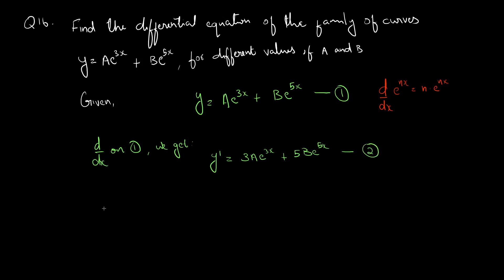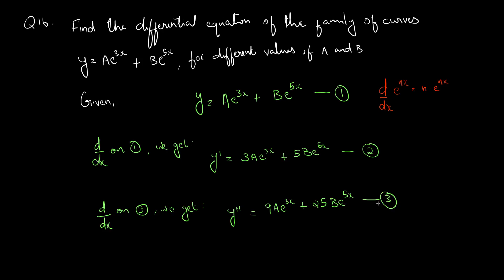Now differentiating equation 2 with respect to x, d by dx on 2, we get y double dash equal to 9a e raised to 3x plus 25b e raised to 5x. We again use this formula. This is our equation 3.